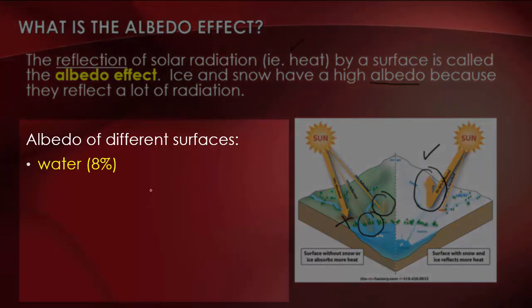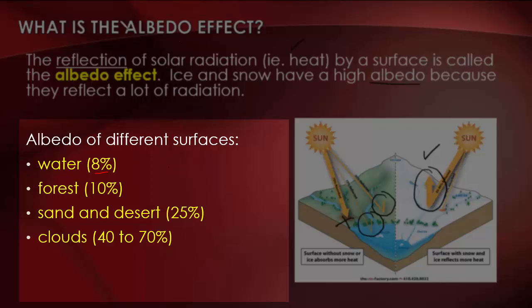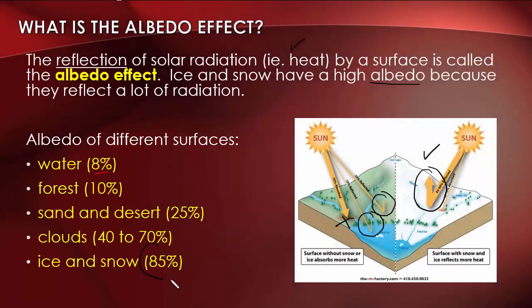There are different materials and surfaces with different albedos. For example, water has an albedo of about 8% — it reflects about 8%. Forest, 10%. Sand and desert, 25%. Clouds, 40% to 70%, depending on the type and amount of cloud. And then ice and snow, about 85%. So you can see there's quite a bit of reflection with ice and snow.